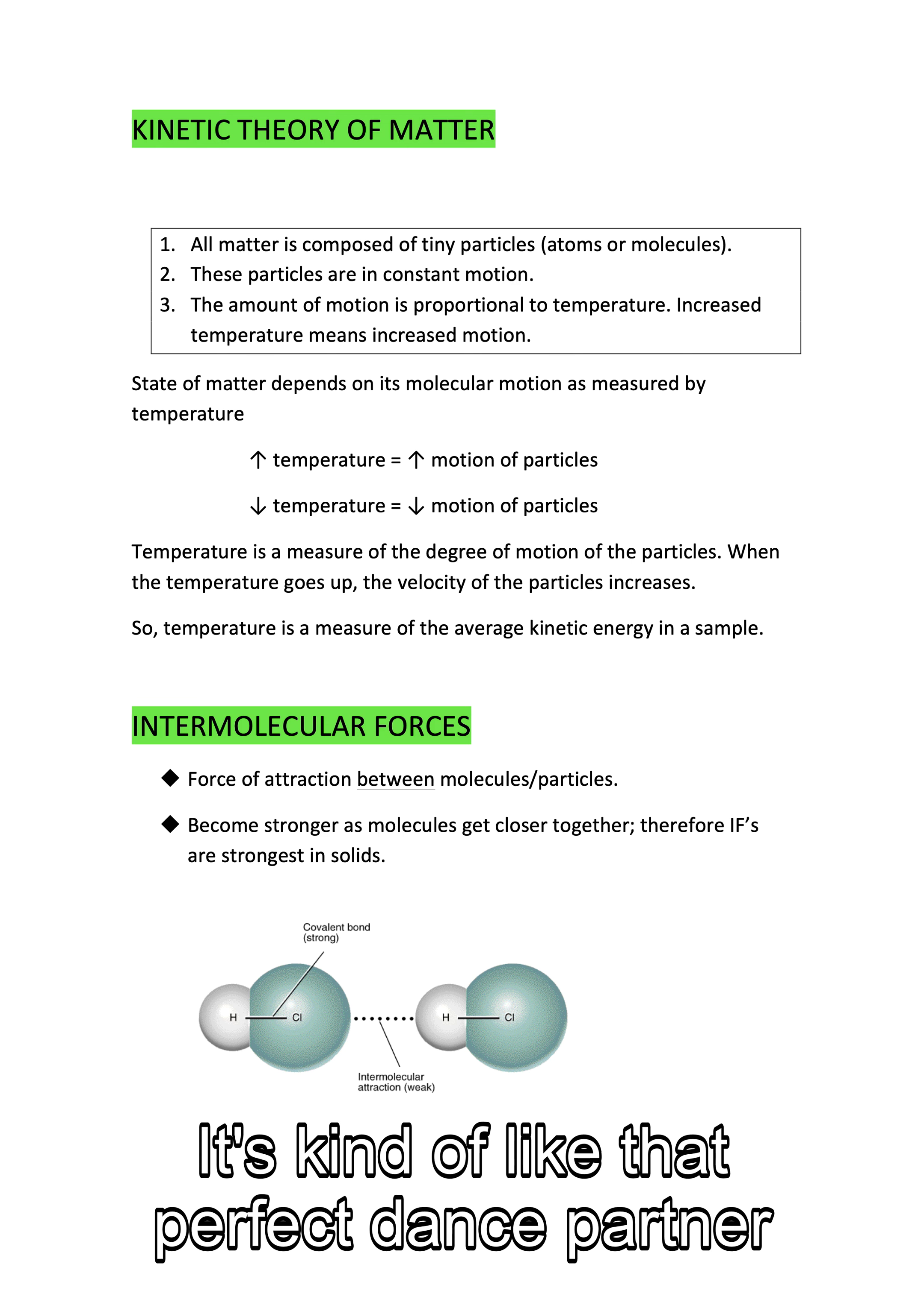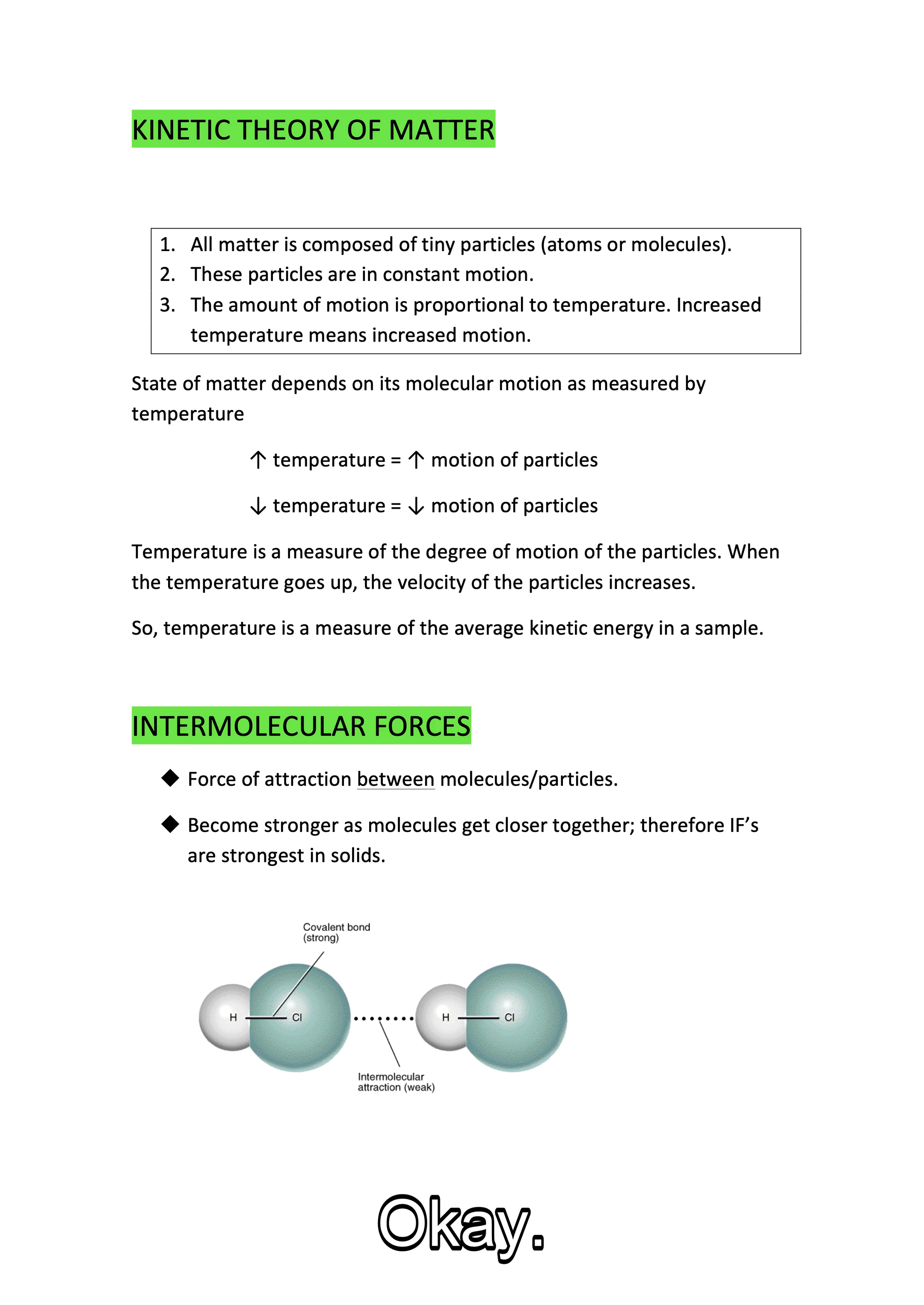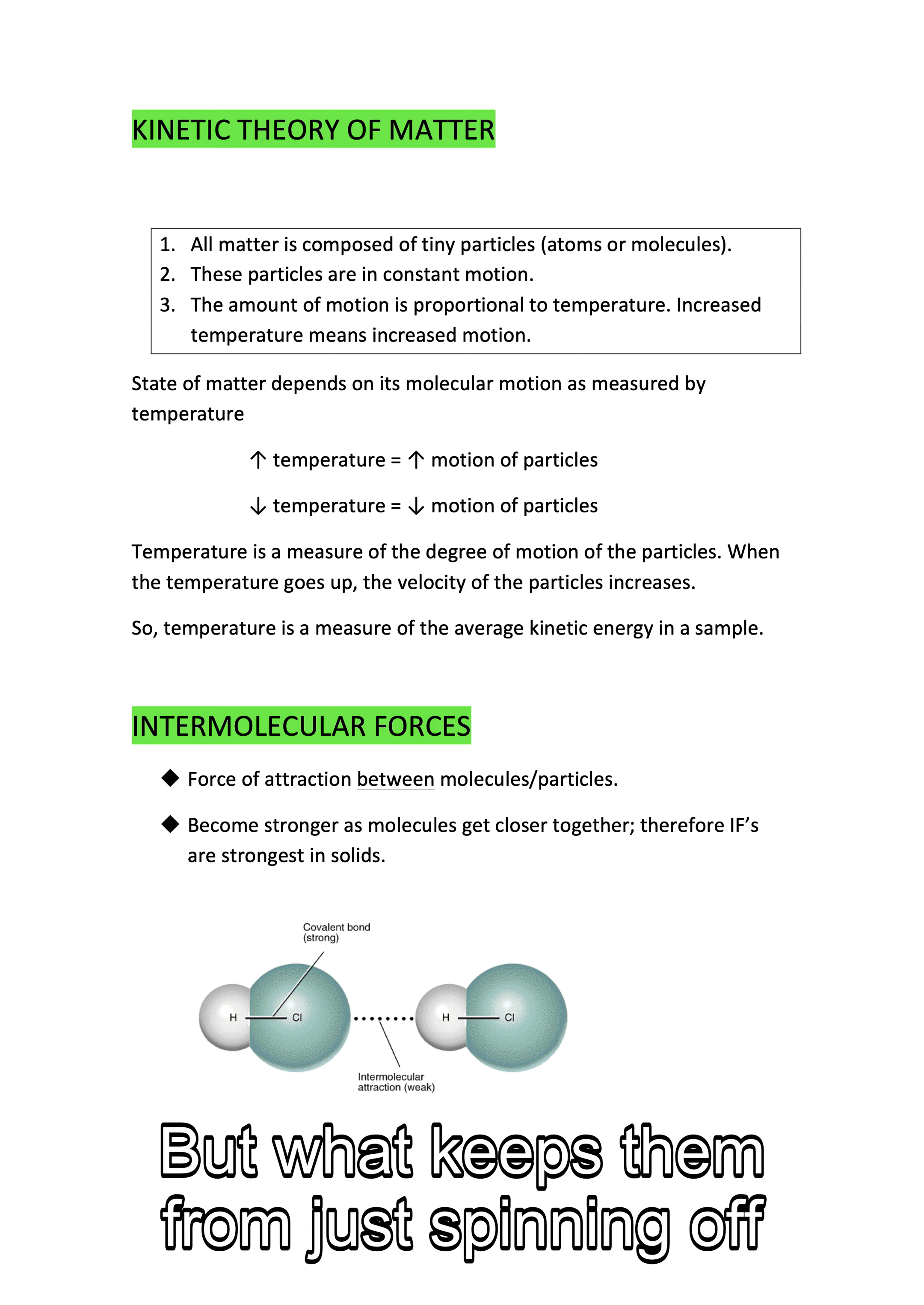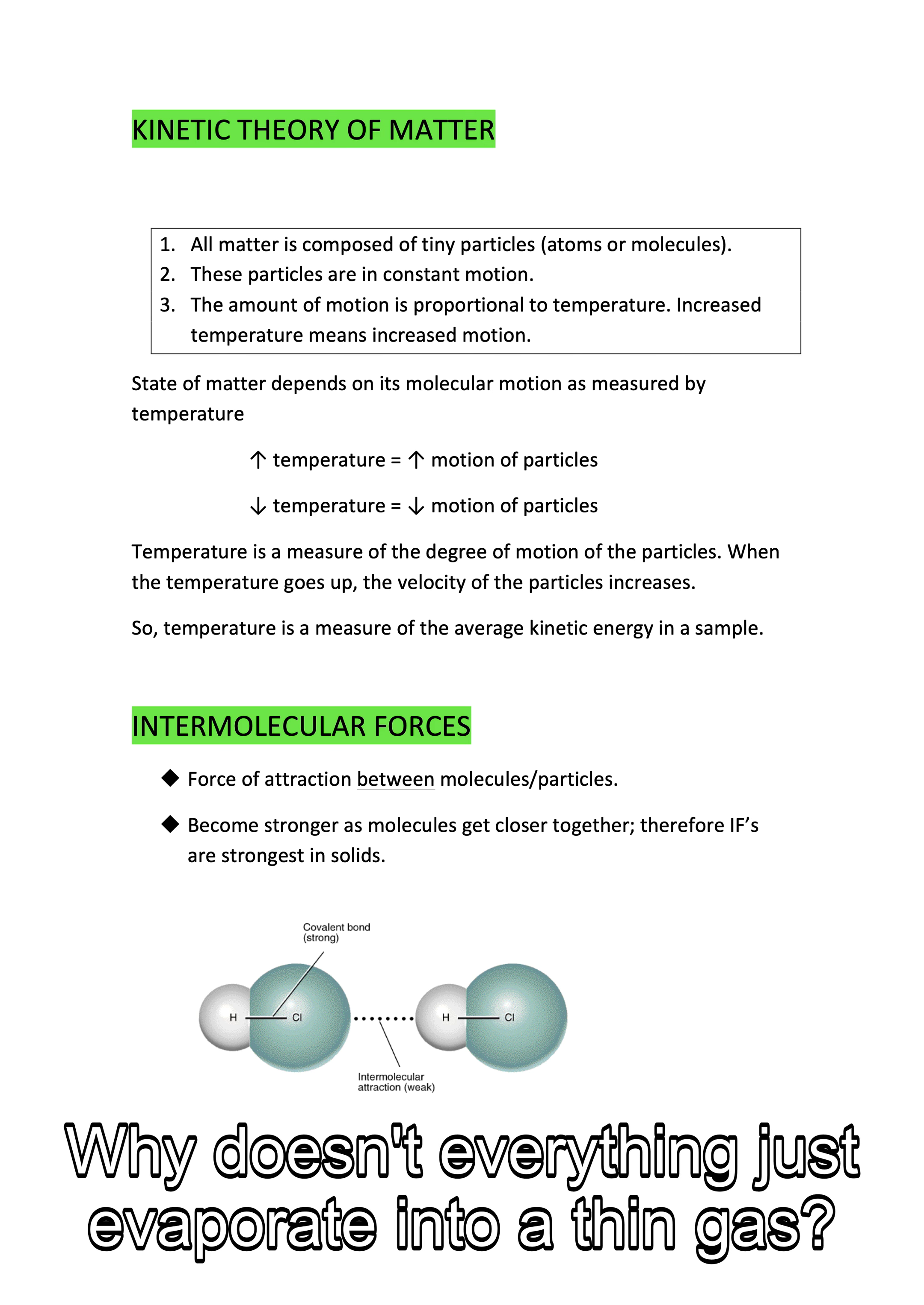Absolute zero, where all motion stops, is more of a theoretical limit. It's kind of like that perfect dance partner who never steps on your toes. So we've got all these tiny dancers twirling around. What keeps them from just spinning off into the vast universe? Why doesn't everything just evaporate into a thin gas?